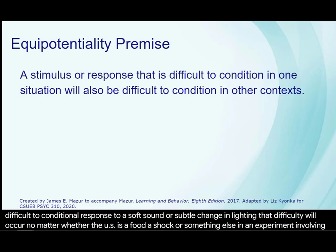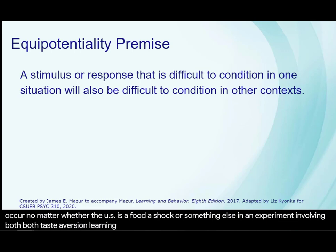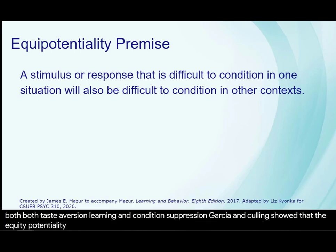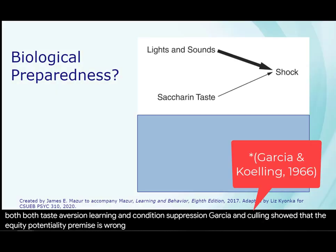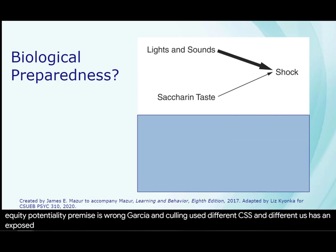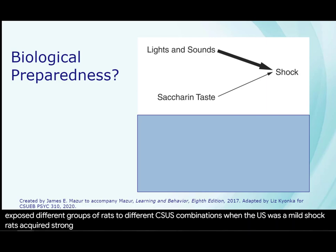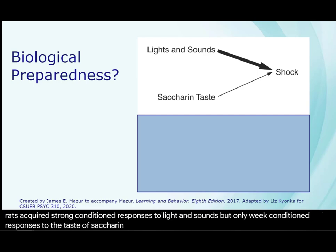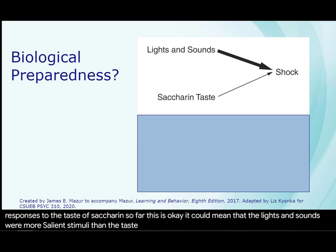In an experiment involving both taste aversion learning and conditioned suppression, Garcia and Culling showed that the equipotentiality premise is wrong. They used different CSs and different USs, exposing different groups of rats to different CS-US combinations. When the US was a mild shock, rats acquired strong conditioned responses to lights and sounds, but only weak conditioned responses to the taste of saccharin. So far this could mean that lights and sounds were more salient stimuli — there's no violation of the equipotentiality premise just yet.